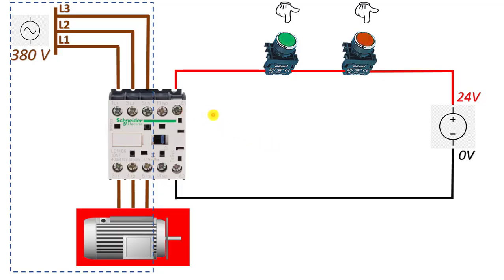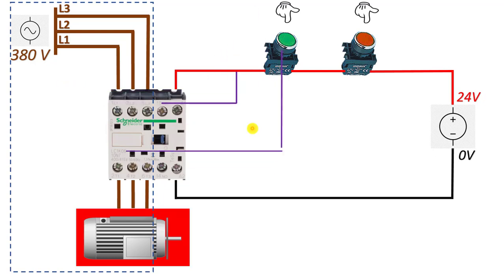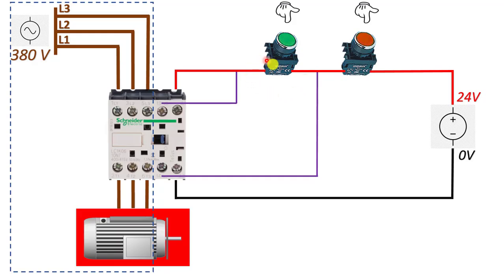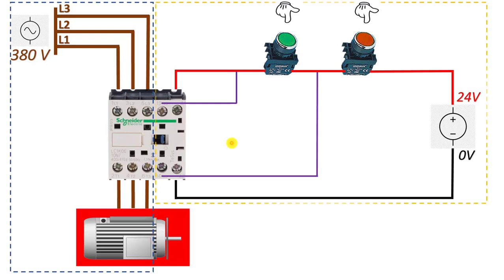When the required voltage is provided to the coil, the three main contacts and one auxiliary contact move to the closed position. For sealing, I use the auxiliary contact. I connect the input leg of the auxiliary contact to the start and connect its output leg in parallel with the start button. By connecting the auxiliary contact in parallel with the start button, even if I release the start button, the circuit continues to be completed through this auxiliary contact and the system keeps running.